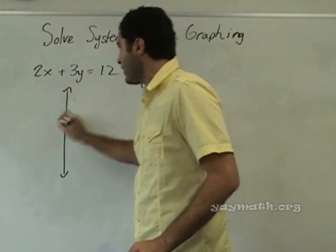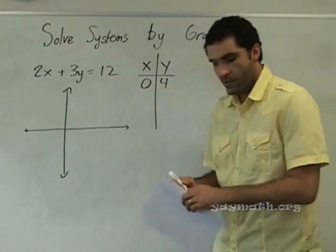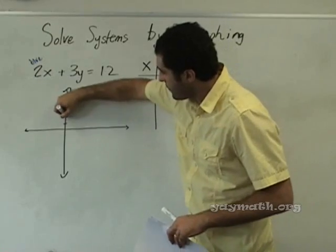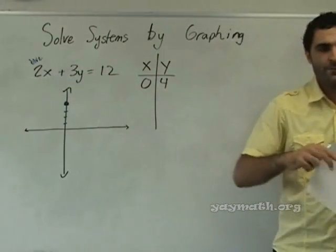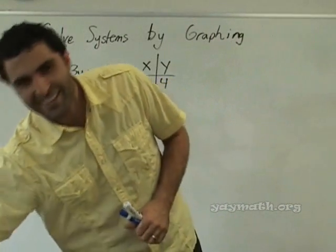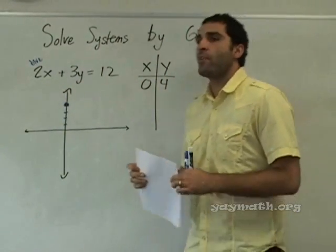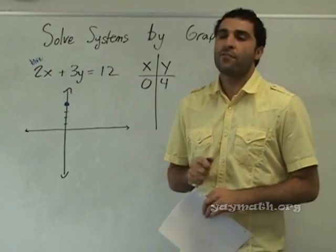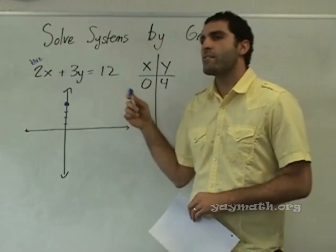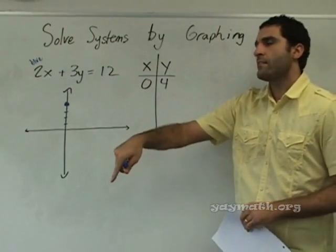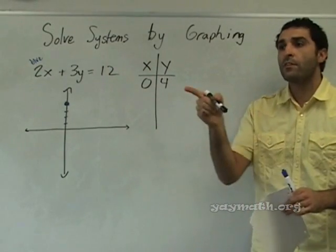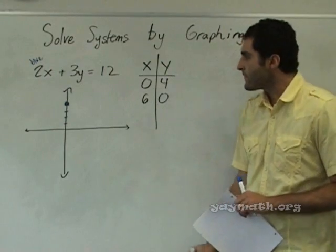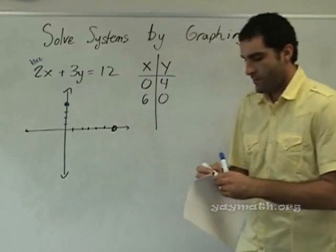So let's go ahead and graph it — you can graph it on your paper. We're getting zero, four and I'll graph this one in blue. What's another solution? Six, zero — x is six. Six, zero is correct, six, zero is a solution. Let's go ahead and put that one down. Should have done it in blue — so there's blue.